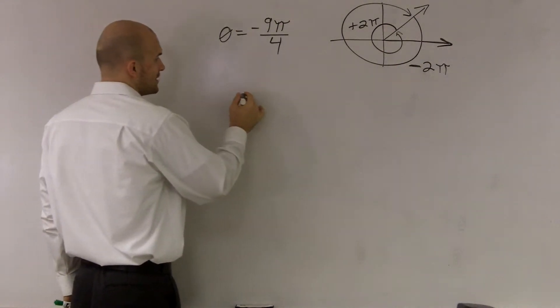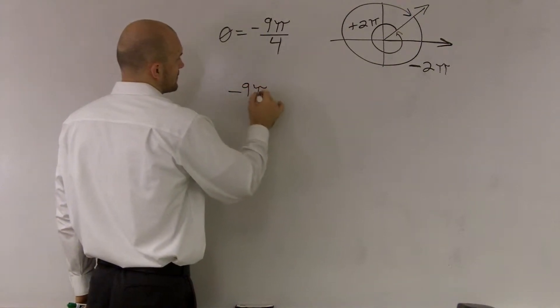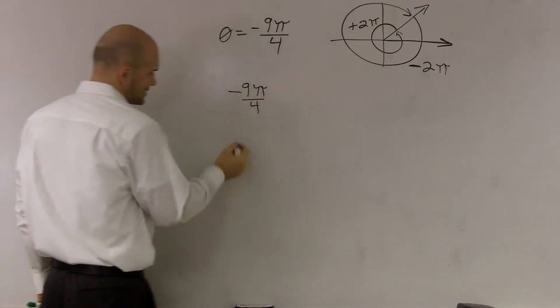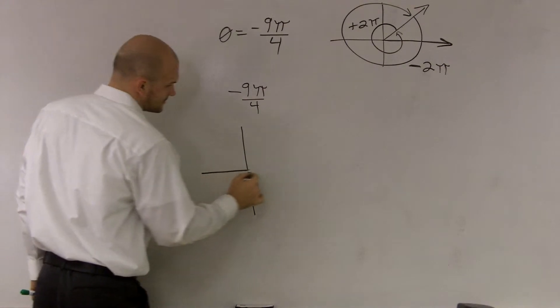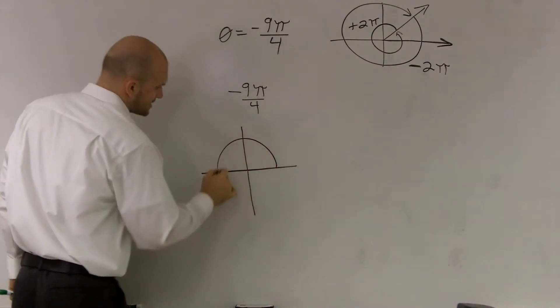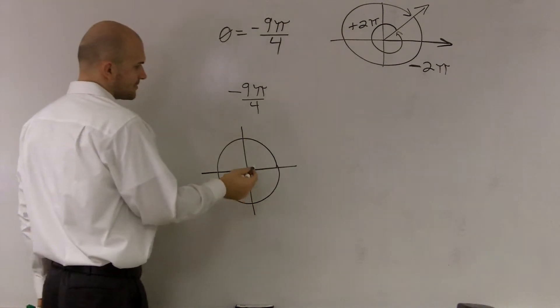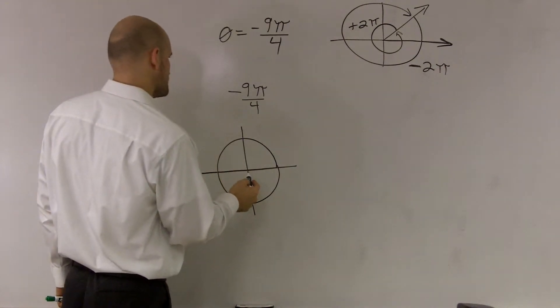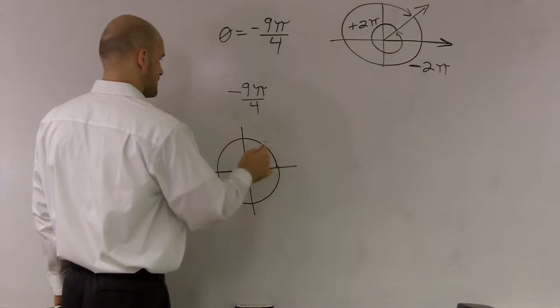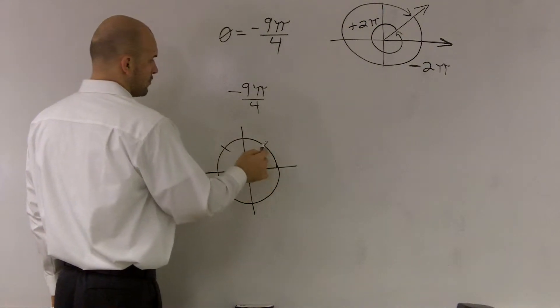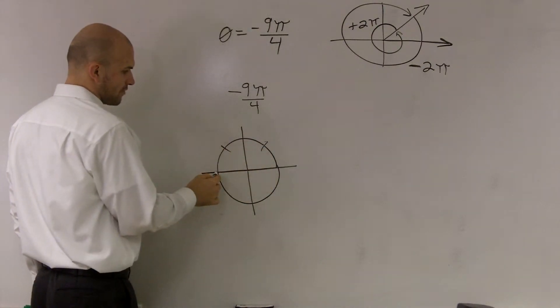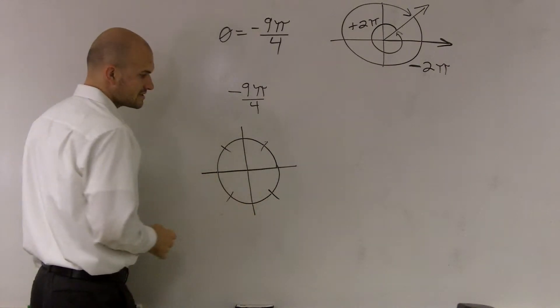So the way to do that is, here's my angle, negative 9π over 4. And I'm actually going to draw where that'd be so you guys can kind of see it. So here's my unit circle. It's going to be in fourths. So one-fourth, two-fourths, three-fourths, four-fourths. So that's in fourths.